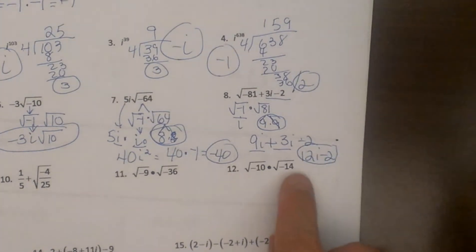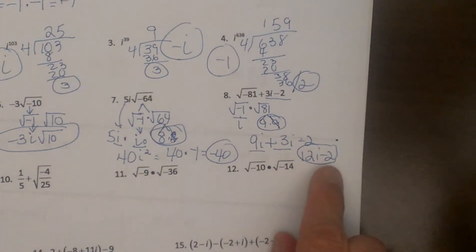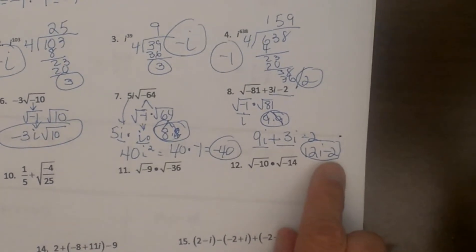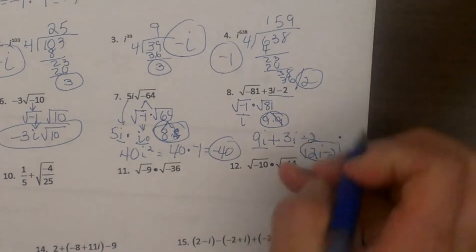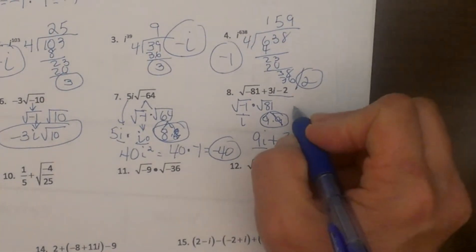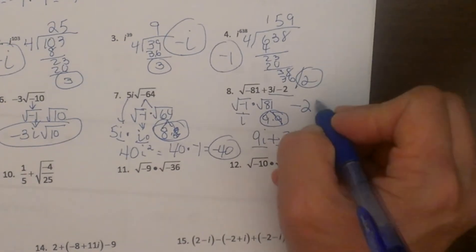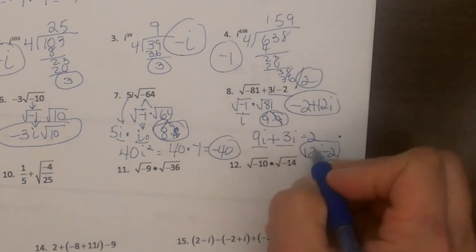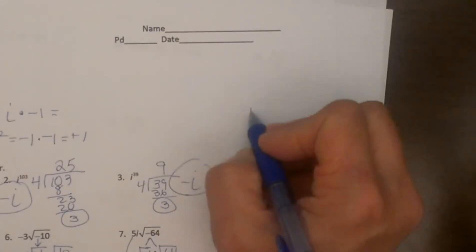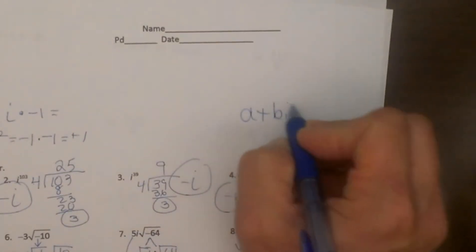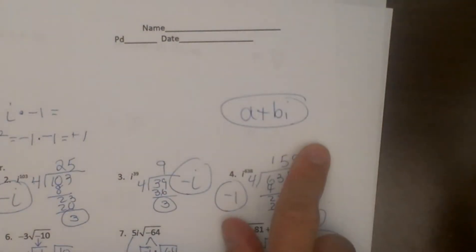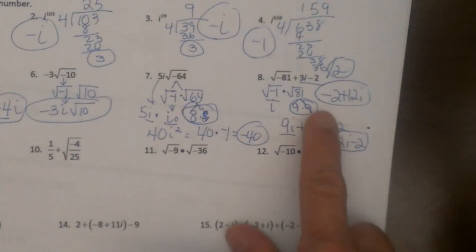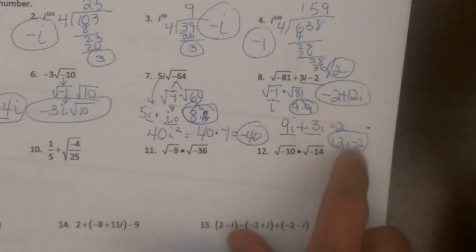That is my final answer because I can't combine those — that one has an imaginary number and this one is a real number. Now to write it in the correct form I really need to write it as negative 2 plus 12i, because we want to write it in what we call the a plus bi form, which is the form of a complex number. So always write the real part first and the complex part second.